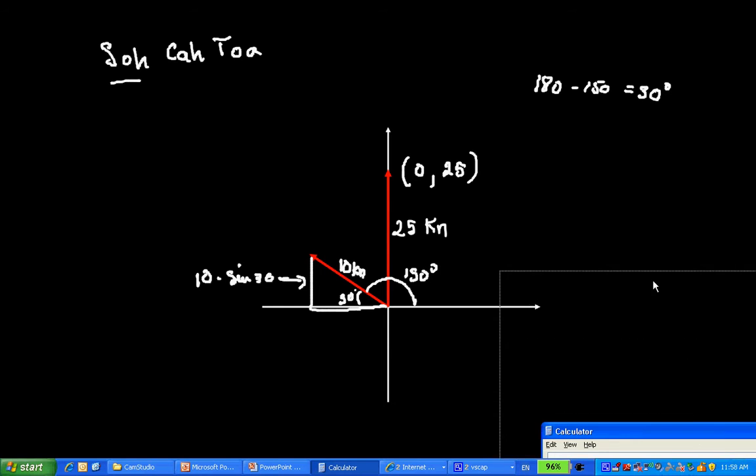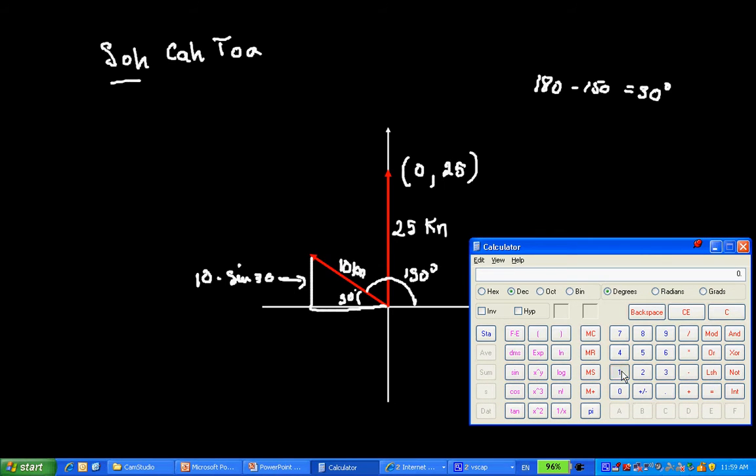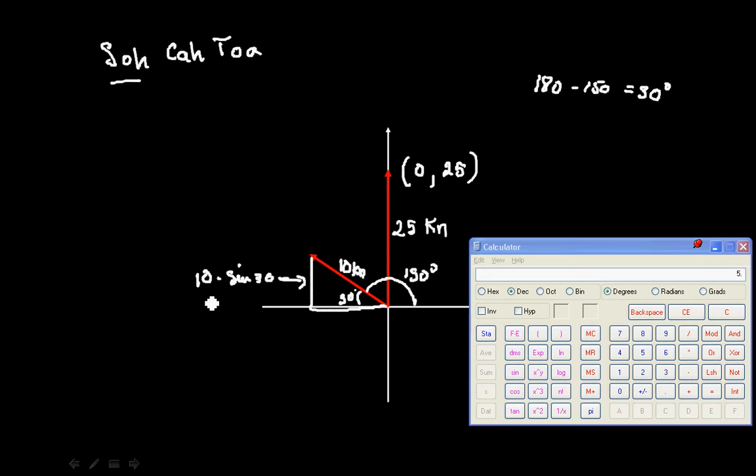Let's pull out the calculator. 10 times sine of 30 equals, so here I have, this is equal to 5 units.